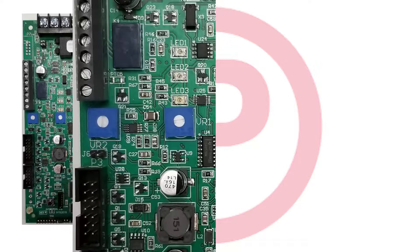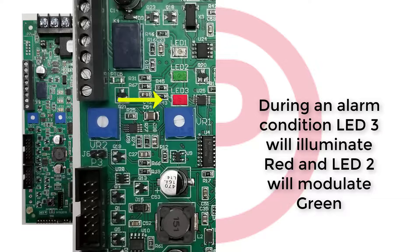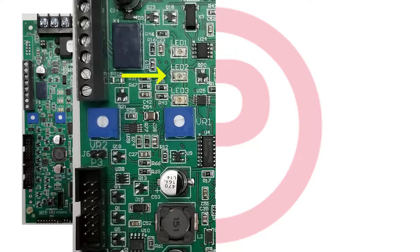If the system is activated upon an alarm condition, LED 3 will illuminate red indicating an alarm while the green LED will modulate. The intensity of the green LED will vary upon the level of the broadcast, or if the mic is keyed, the green LED will dim.